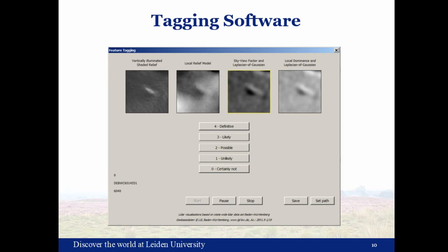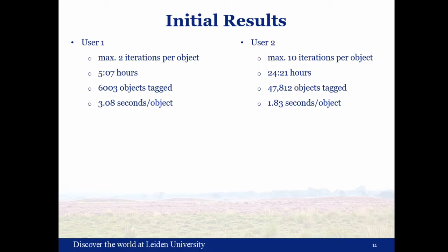Every feature can be shown several times to the same user. The reason for this is that we want a measure for the reliability or stability of every user's interpretation — we want to see whether the same user comes to the same interpretation on subsequent iterations. Looking at some initial results: for now there are two users who have together spent roughly 30 hours tagging around 55,000 objects. For these 29,000 charcoal burning platforms, this means that on average every object has been tagged twice. This is a rather fast process, but there are timing differences between the two users — user two is working quite a bit faster than user one. Even at only two or three seconds per feature, doing this for tens of thousands of features over several iterations really adds up.